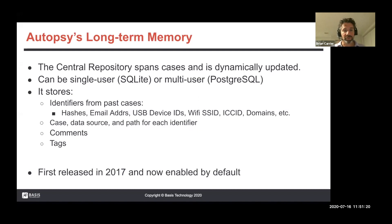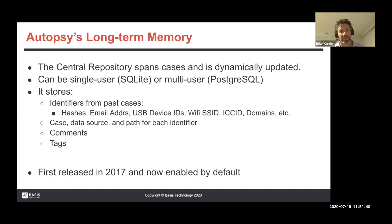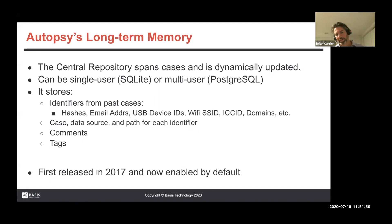We also store the notion of the case, the data source, and the path where you saw each of these items. If you make a comment on a file or tag a file, we store that. This was first released in 2017, but you had to opt in and turn it on. The reason was that many people — mainly in law enforcement — were concerned about search warrant scope: they didn't want to use data from a child pornography case in a drug case. So it was turned off by default, but it's become much more useful and is now on by default.